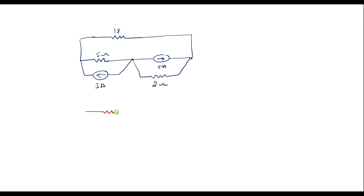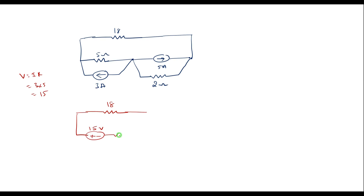I will convert this current source into a voltage source: V is equal to I into R — I is 3, the resistor is 5 — so the magnitude of the voltage source is 15 volt. The same 5 ohm resistor will appear in series. Here also I will convert into a voltage source: V is equal to 5 into 2, which is 10 volt. The same 2 ohm resistor will appear in series. Now this is the final circuit.